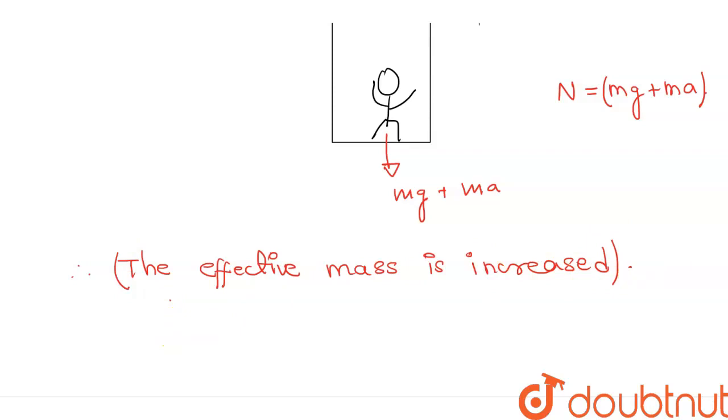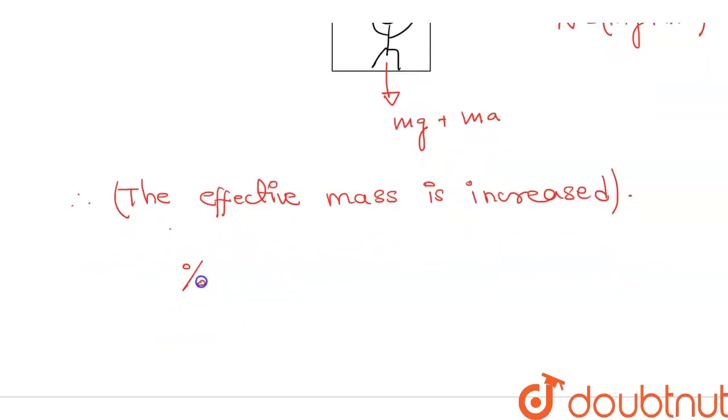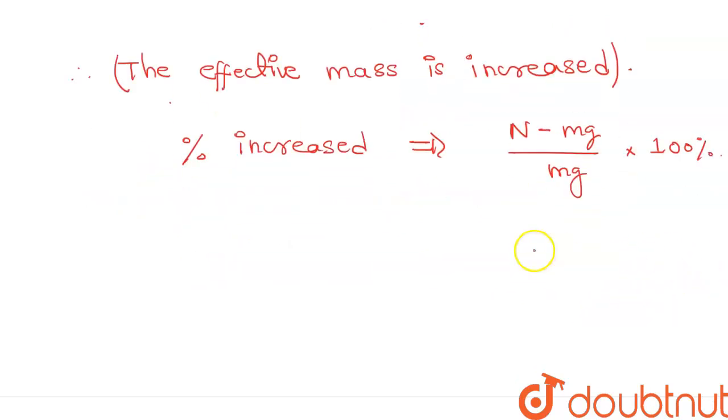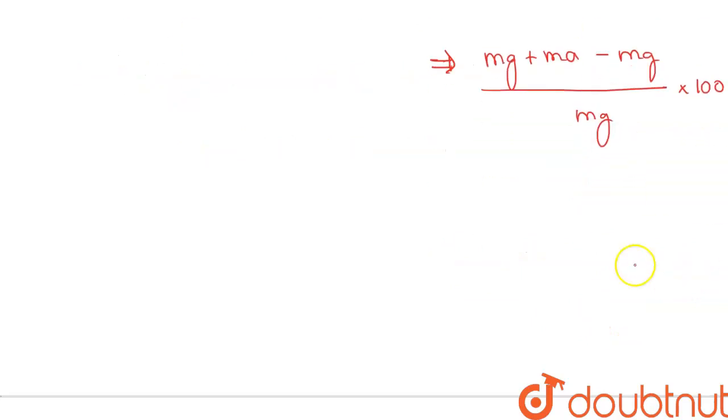So now, let's find out the percentage that has been increased. Percentage increased will be N minus Mg over Mg into 100%. So, N will be Mg plus Ma minus Mg over Mg into 100%. Simplifying this, Mg and Mg will get cancelled, we will get A over G. That will be 3.675 over 9.8 into 100%. So, we will say that it is increased by 37.5%.